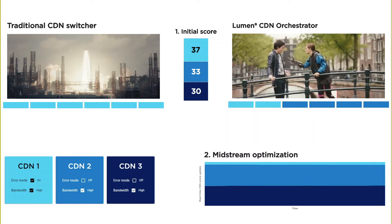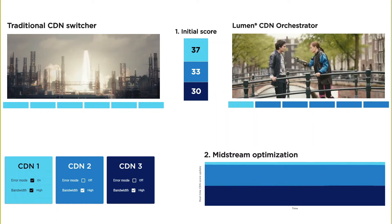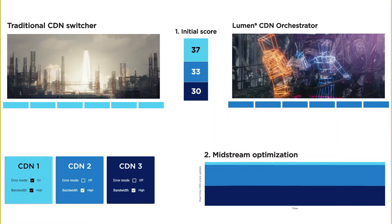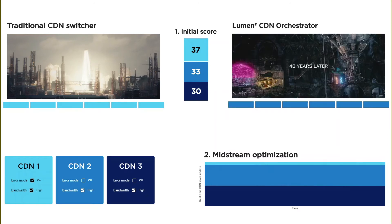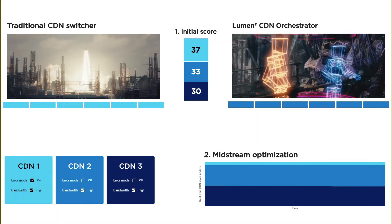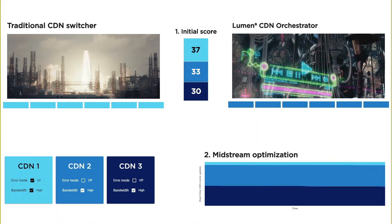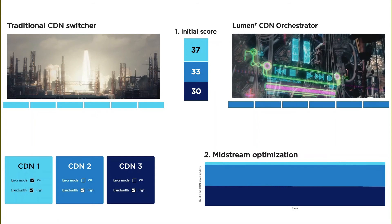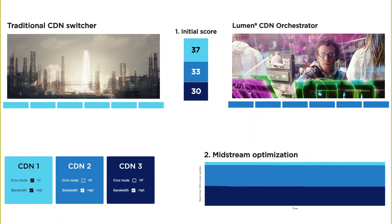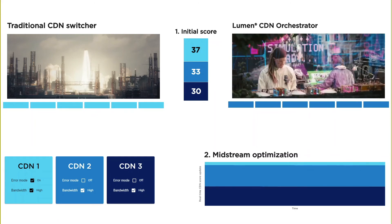As the information that the player had on CDN2's bandwidth was incomplete, it fetched the first segment in a lower quality to make sure we would not be at risk of rebuffering. And once the player had measured CDN2 bandwidth through this segment download, it can safely resume playing the higher quality track.